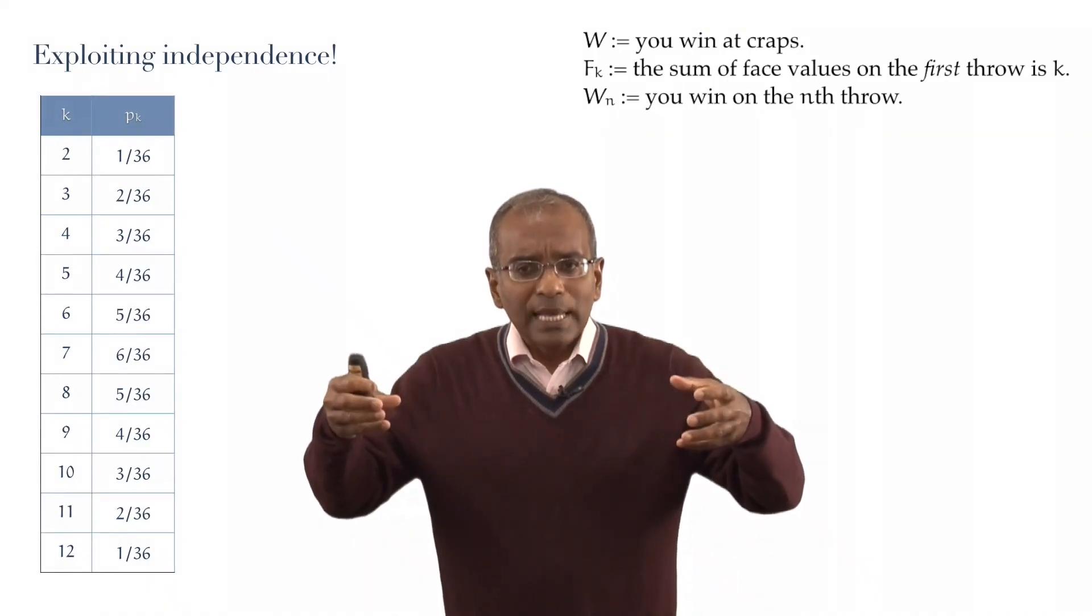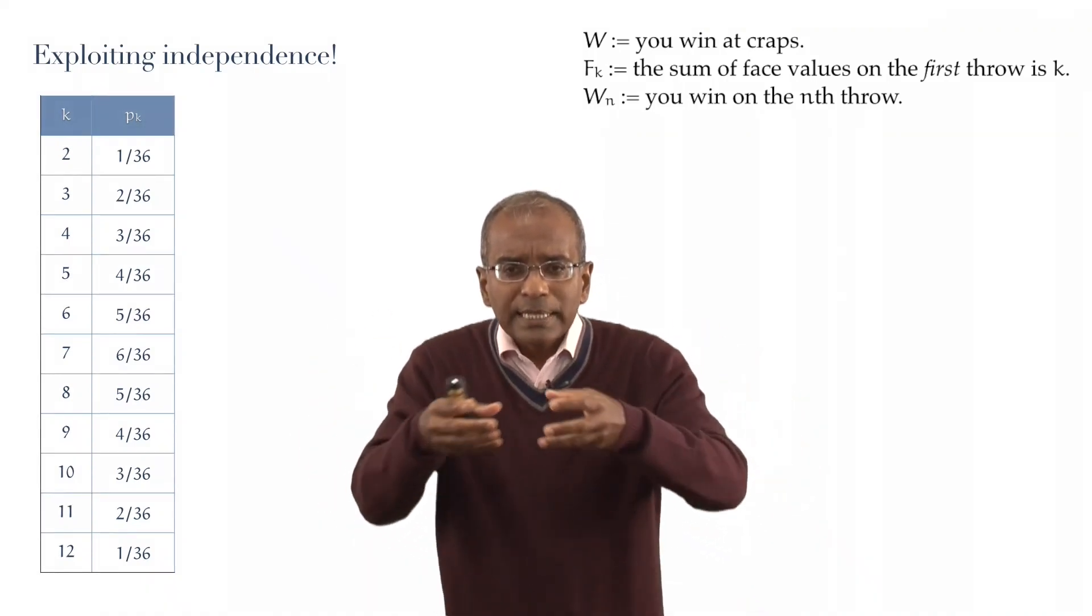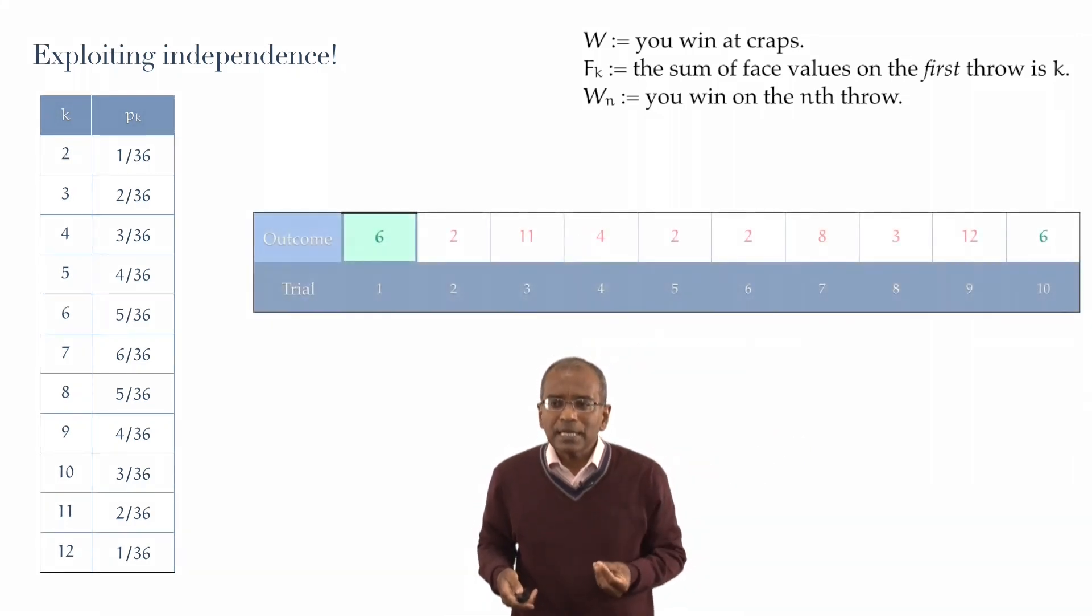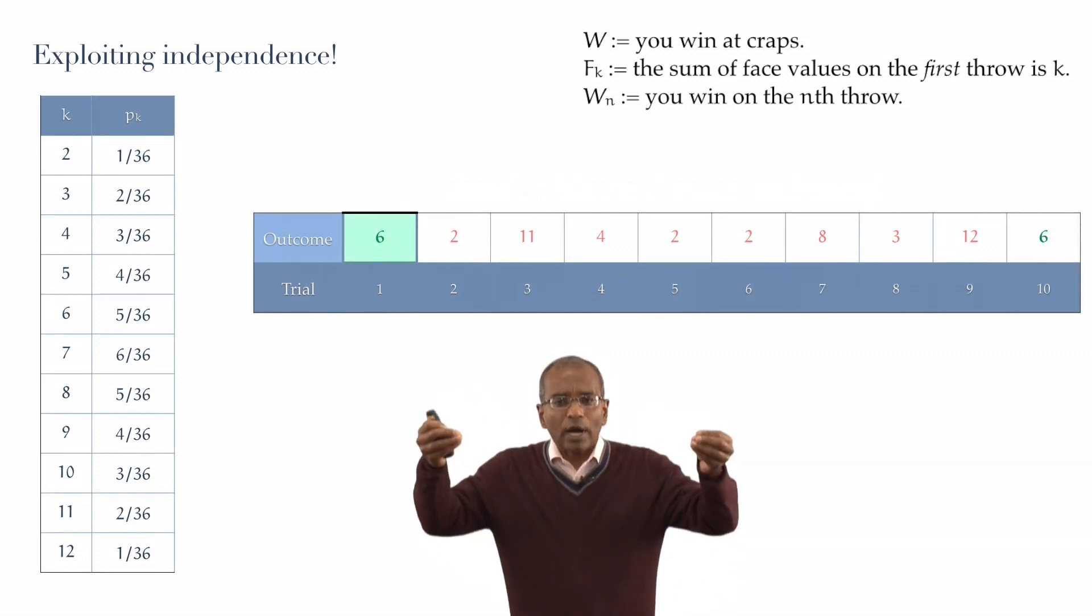To come to a right understanding of the structure, let's take a simple test case. Suppose, for definiteness, that we threw six on the first trial, and that we won on the 10th trial. So if we won on the 10th trial, and we threw six on the first trial, then here's a common kind of picture that might emerge.